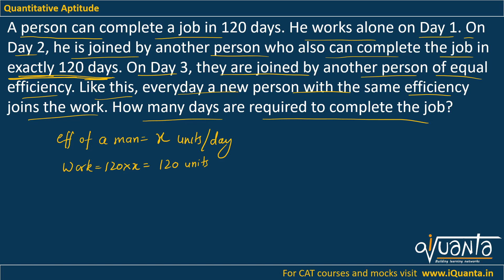Every day one man is joining. On day 1 we will have x units completed. On day 2 there will be 2 men with x units each, so they will complete 2x work. On day 3 we will have 3 men of x efficiency so 3x units of work will be done, and so on. We have to complete 120x units total.